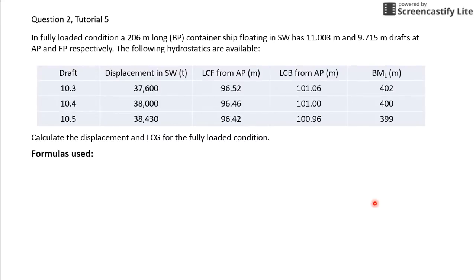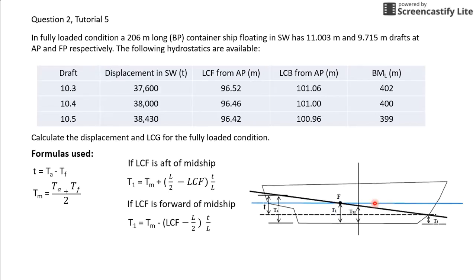The first part I'm going to go through is the formulas used in this tutorial. The first one is to find the trim, which is T_A minus T_F (trim at aft minus trim at forward). The second formula is to find the mean draft at midship, which is obtained by (T_A + T_F) / 2.